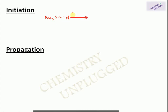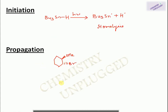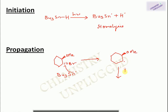The mechanism begins with the initiation step: the Bu₃Sn–H bond undergoes homolysis, producing a Bu₃Sn radical and an H radical. In the chain propagation step, the tributyltin radical attacks the bromine on the substrate, abstracting it to form Bu₃SnBr and leaving a carbon radical. The H radical then attacks that carbon to give the final product.